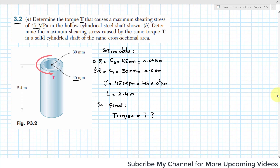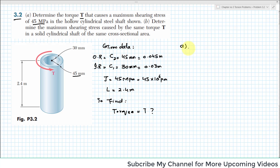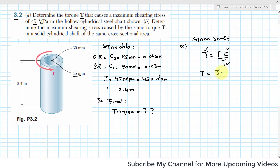This is part one. Let's solve part one for the given shaft. As we know, maximum shearing stress is equal to T·C divided by J, where T is torque, C is the distance from the center to the outermost fiber — that is C2 — and J is the second polar moment of inertia. So torque will be equal to shear stress times polar moment of inertia divided by C.